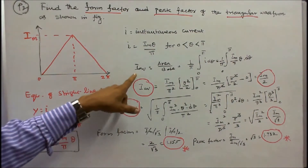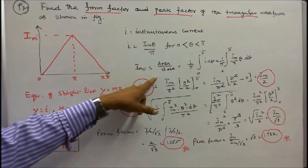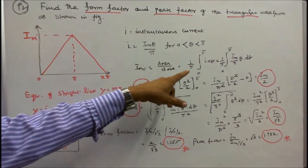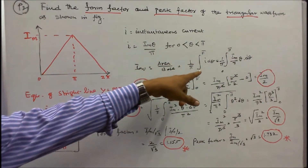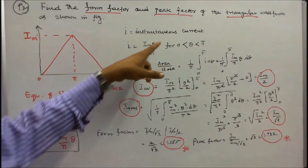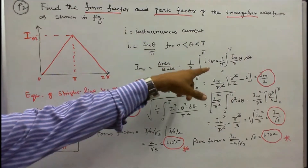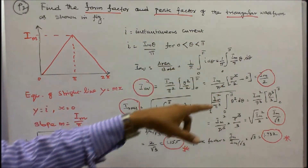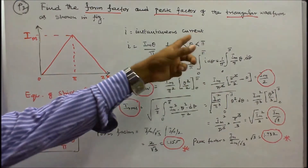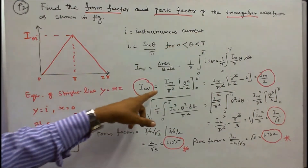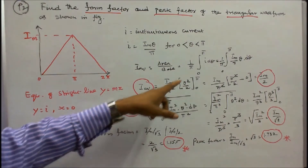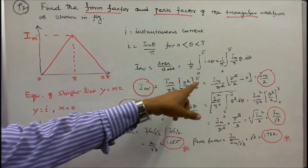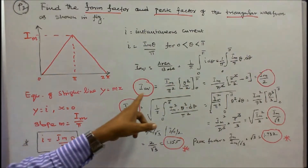The average value is area divided by base, with base equal to pi. So I_average = (1/pi) × integral from 0 to pi of I dθ, where I = I_m × θ / pi. That gives (1/pi) × integral from 0 to pi of (I_m / pi) × θ dθ. Integrating and substituting limits: I_average = (I_m / pi²) × [θ²/2] from 0 to pi = I_m / 2.